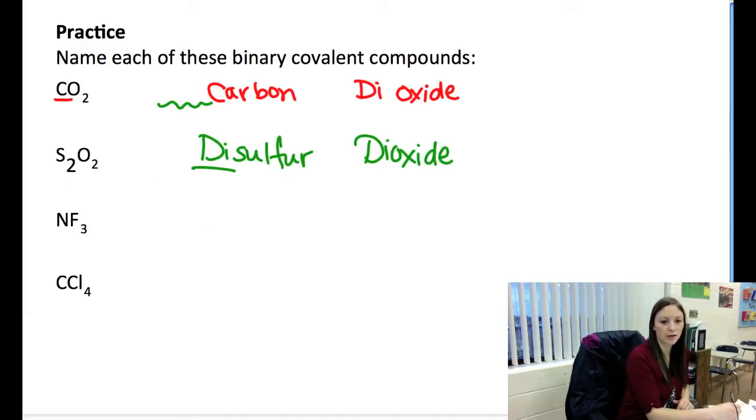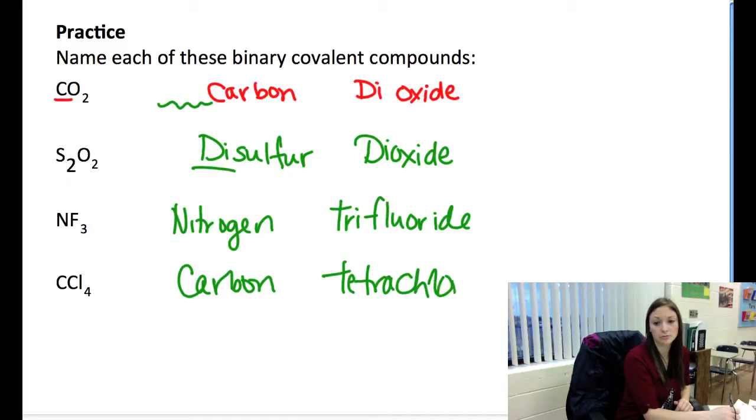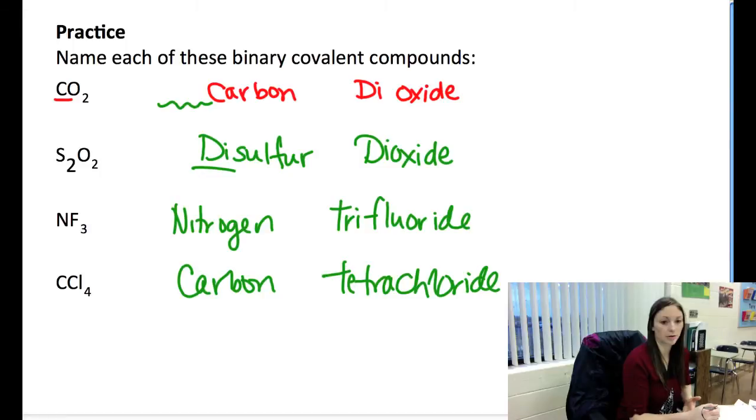So let's try NF3. N is nitrogen. F is fluorine. There's three of them, so I put trifluoride. And look at the last one. Got a carbon, and there's one of them, but it's first, so I don't put mono. And I'll put carbon. Four chlorine, so I go tetrachloride. And those are really that easy to name. You look at how many there are, and look at what they are.